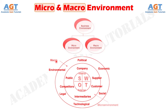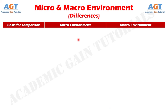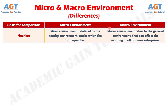So, let's look into the basic differences between micro and macro environment in a tabular form. Difference number 1: the micro environment is the environment which is in immediate contact with the firm, whereas the environment which is not specific to a particular firm but can influence the working of all the business groups is known as macro environment.